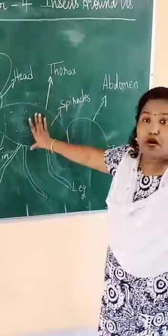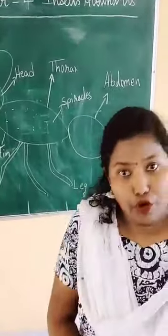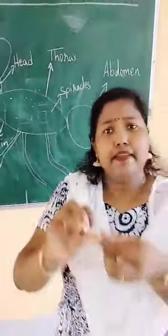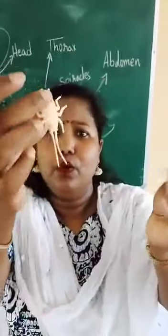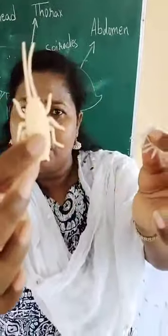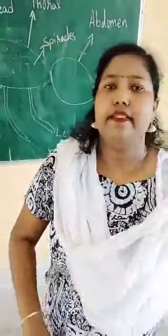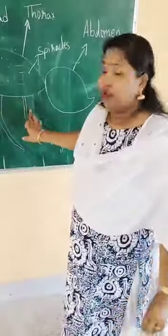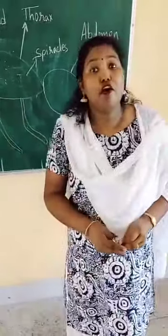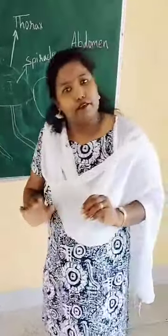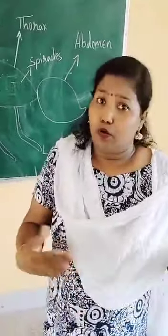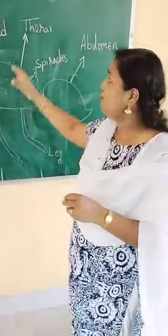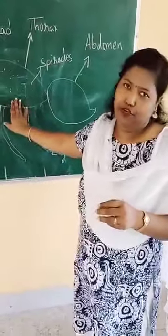This is called the thorax. This part of an insect is called thorax. When you look at an insect — look at this cockroach — the insects have six legs. They have six legs and a pair of wings. Some insects have a pair of wings, like a cockroach, mosquito, flies. They have wings attached to the thorax.